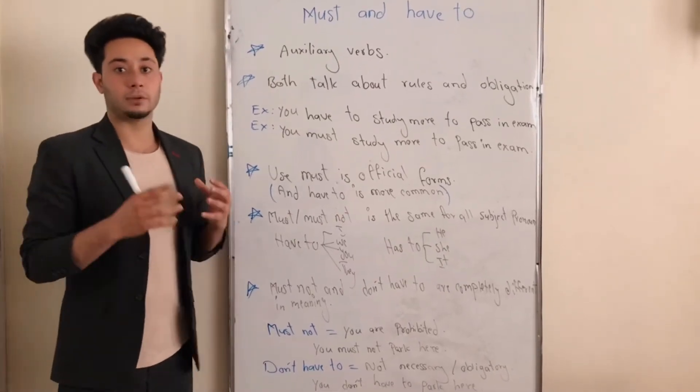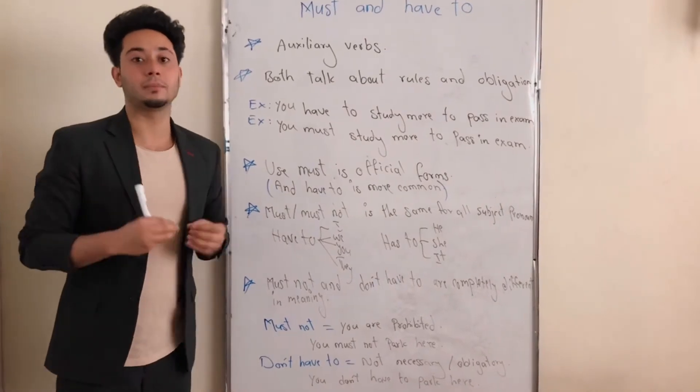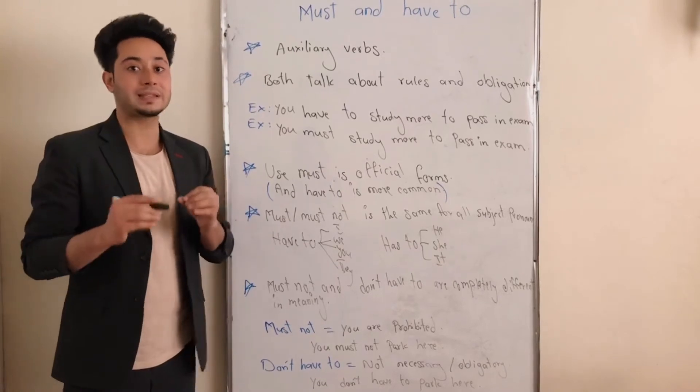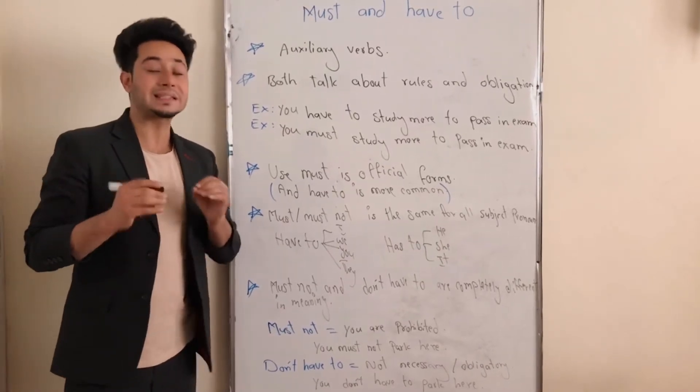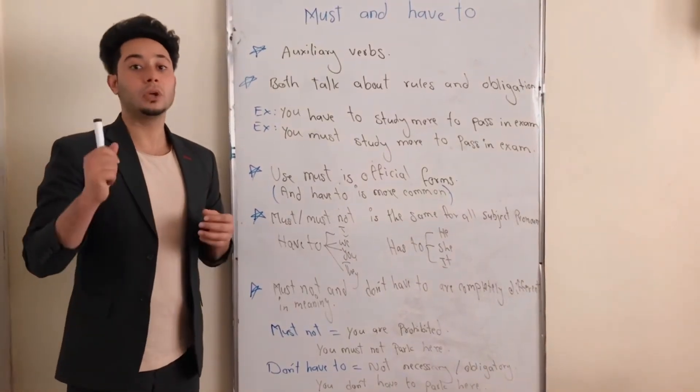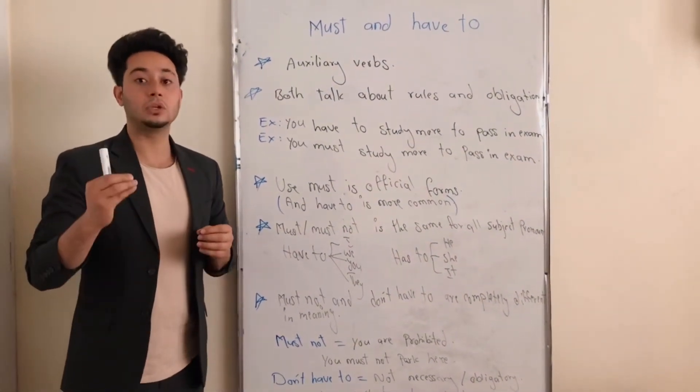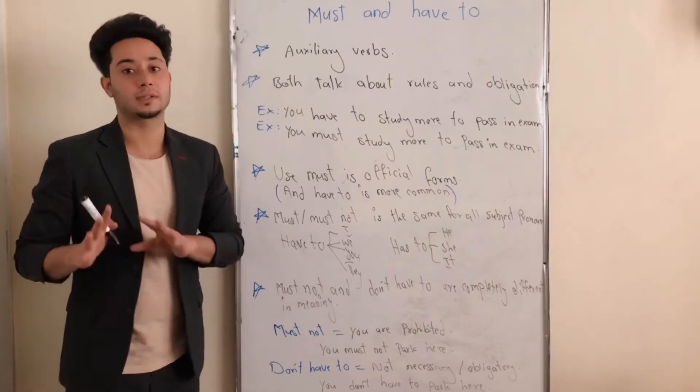Okay, let's talk about must and using them with subject pronouns. We use must and must not for all subject pronouns. It means must and must not are the same for all subject pronouns. And we use have to for first and second person, which are I, we, you, they. And we use has to for third person, which is he, she, and also it.